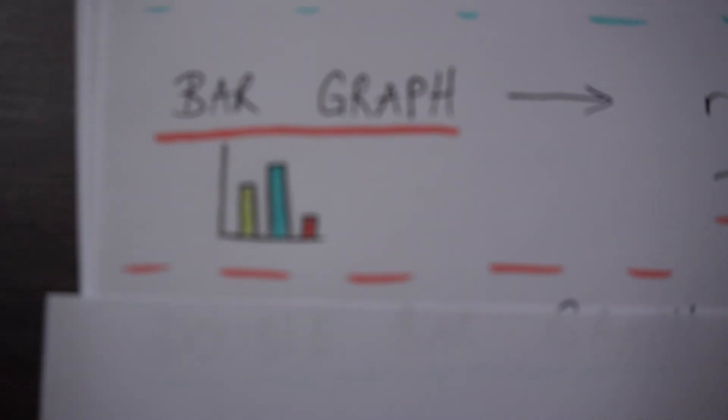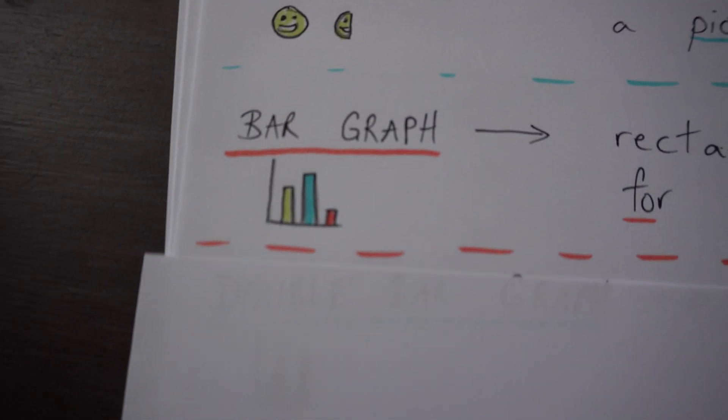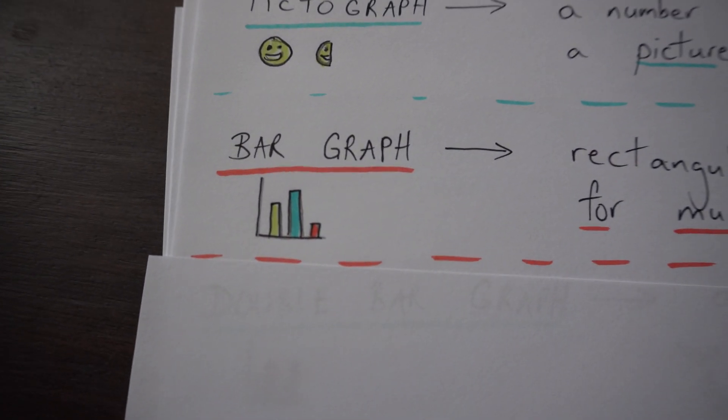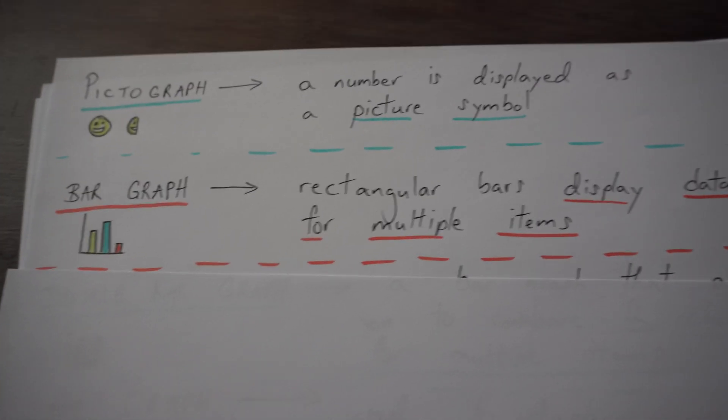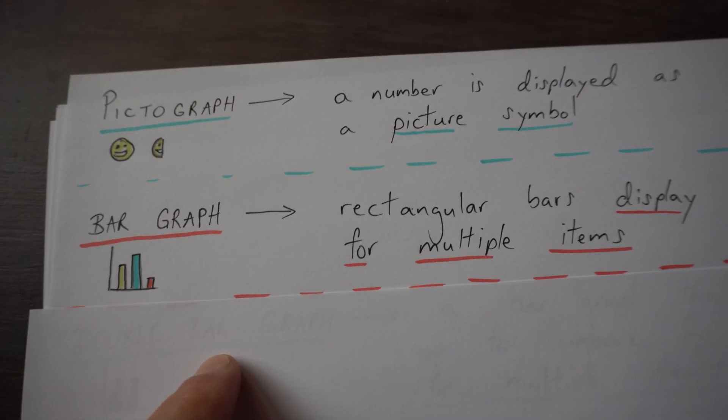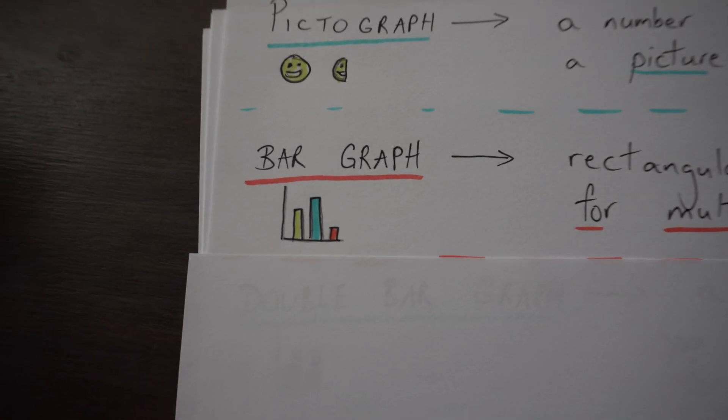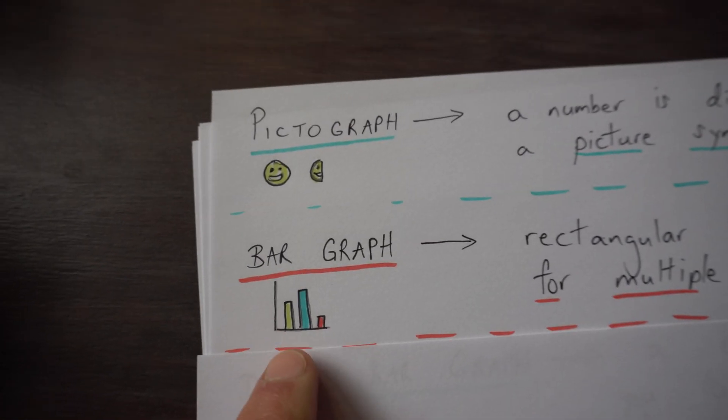Next we have bar graph. Bar graph is when you have those rectangle shaped bars, and what it is is a graph that lets you display data for multiple items. So what's a favorite type of drink? Maybe lemonade, blueberry juice or raspberry juice for kids in 6B.